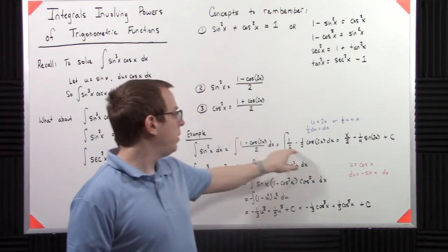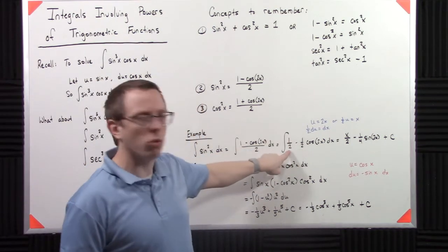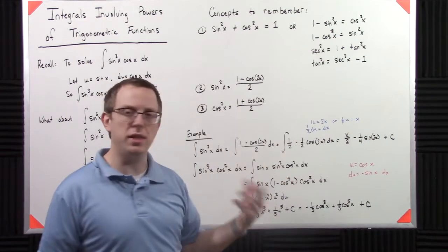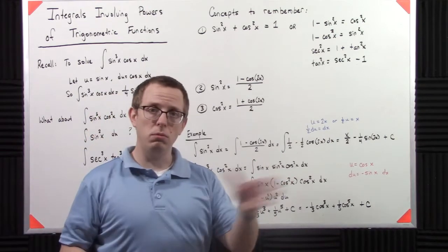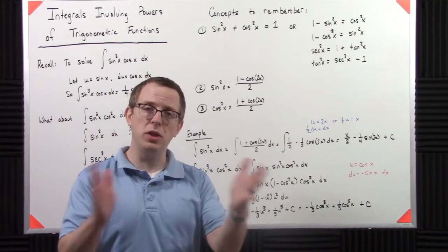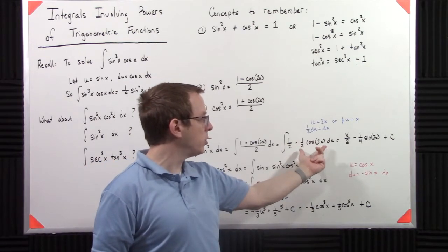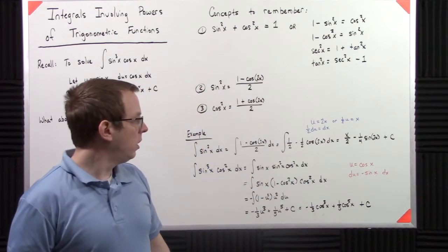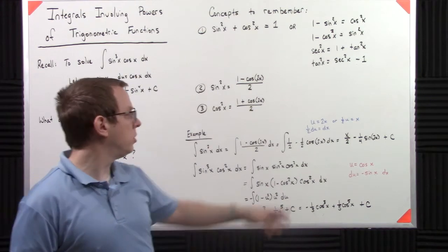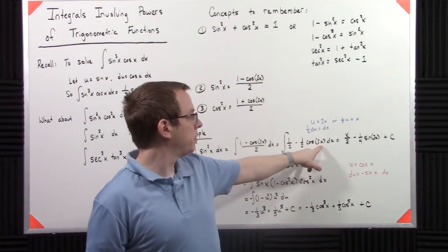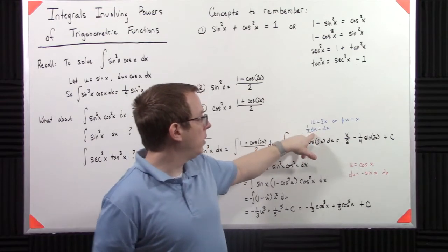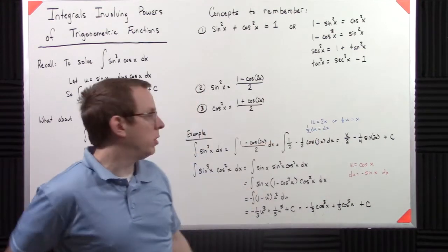And now that I have these two, well, this integral 1 half dx, that's easy, right? That's just x over 2. So you could separate those integrals and then you need to look at 1 half cosine of 2x dx.